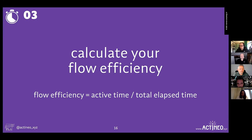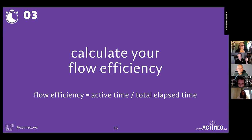I'm going to ask you now to just take a moment to calculate the flow efficiency. We're going to pop you back into the same breakout rooms — have a look at what you've got there. The way we do this: look at the total amount of time it took, count all the cells, then count the green cells which is the active time, and divide the green cells by the total number of cells. That gives you the flow efficiency. Come up with the flow efficiency for your version of the snake and make a note of it — we'll bring you back in three minutes.